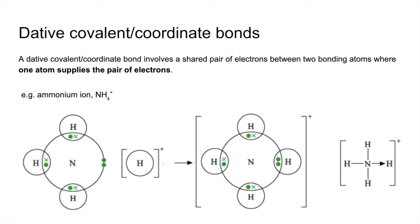And you'll notice here that the arrow is showing the dative covalent bond or coordinate bond. The arrow direction is showing from where the electron pair originates. So the electron pair is originating from the nitrogen and it's gone to this H that was the H+ ion. You can see the arrow is going from the nitrogen to that hydrogen there.